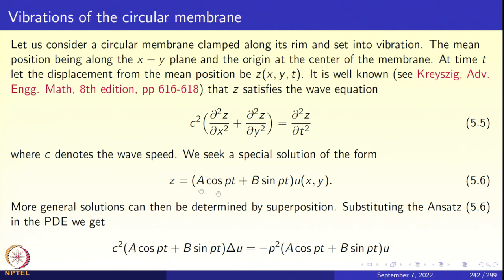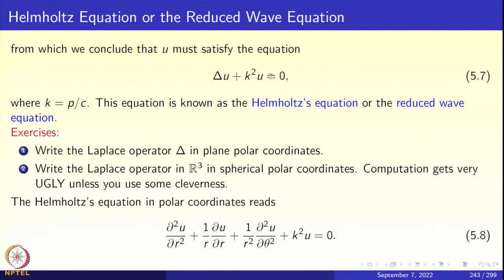Substituting this ansatz into equation 5.5: the right-hand side gives −(a p² cos pt + b p² sin pt)u(x,y), while the left-hand side gives c²(a cos pt + b sin pt)·Δu. Cancelling (a cos pt + b sin pt), the spatial component u satisfies the differential equation Δu + k²u = 0, where k = p/c. This is called the reduced wave equation or Helmholtz's equation.